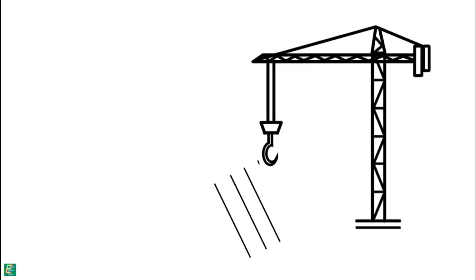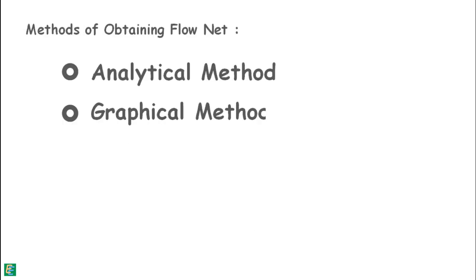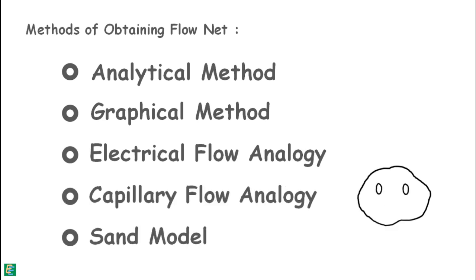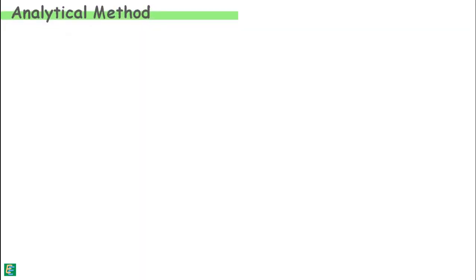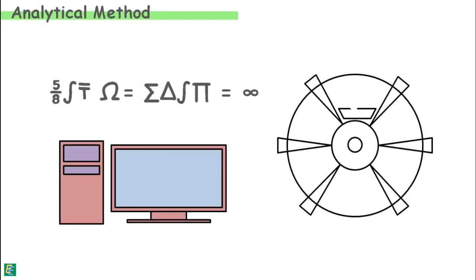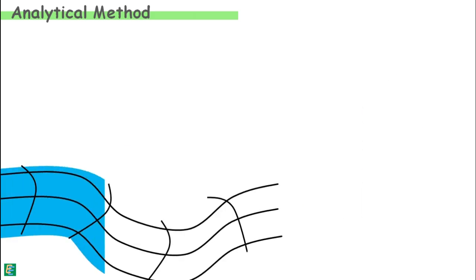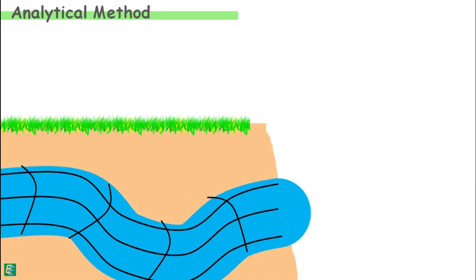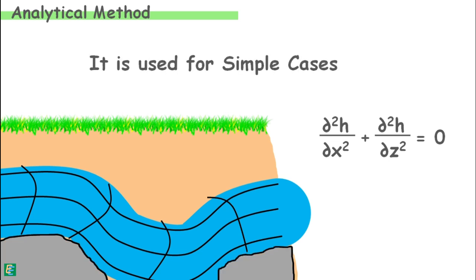How do we construct a flow net for two-dimensional flow? There are some methods for obtaining it, and we will briefly discuss two. The analytical method requires a good understanding of mathematics. It is the mathematical solution to an equation obtained from the flow conditions. It can be used in relatively simple cases of flow where the boundary conditions are known and can be expressed in equations.